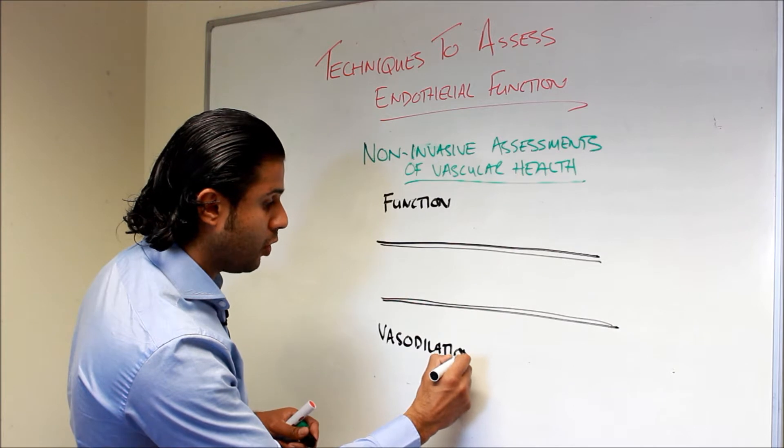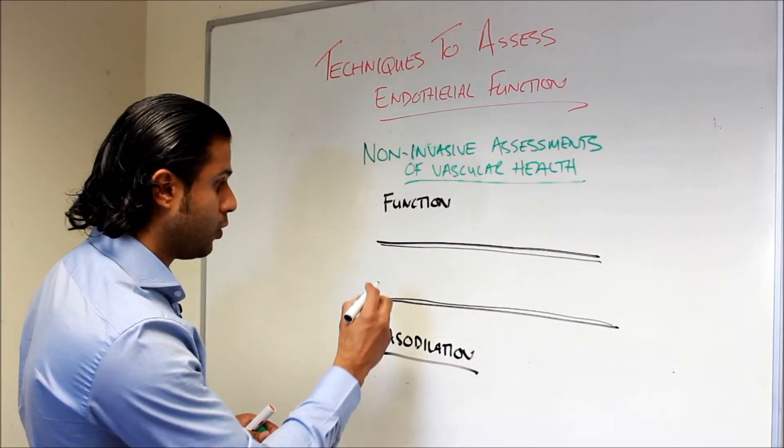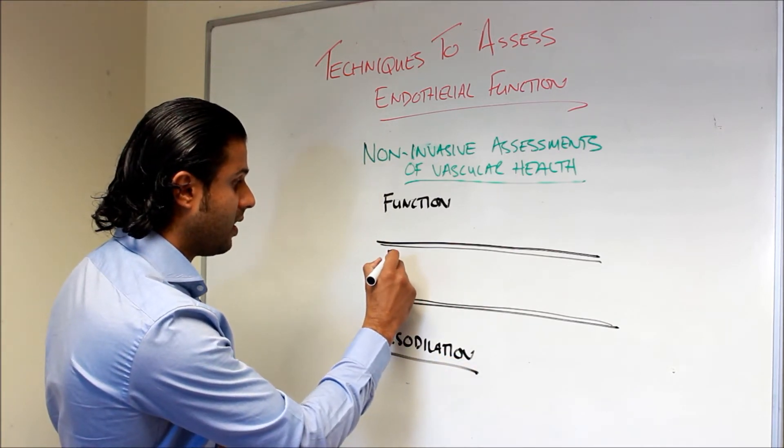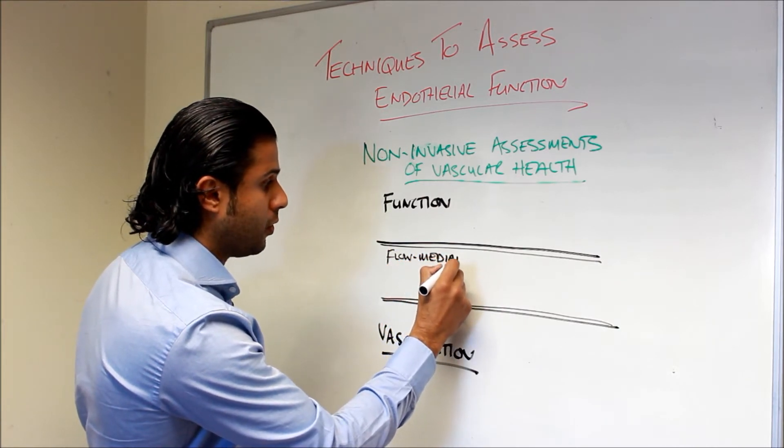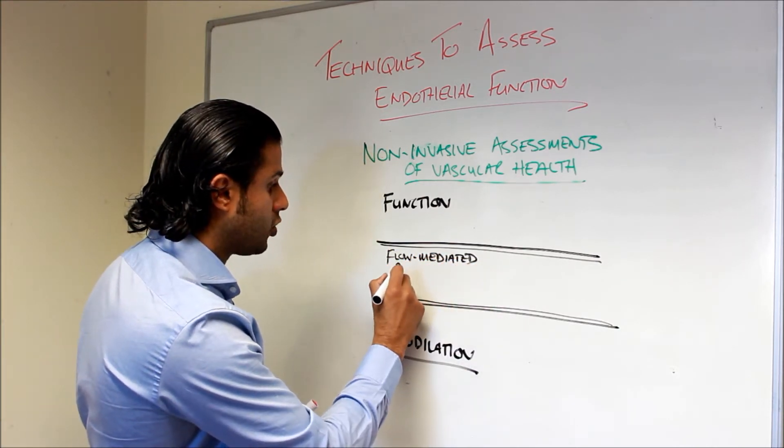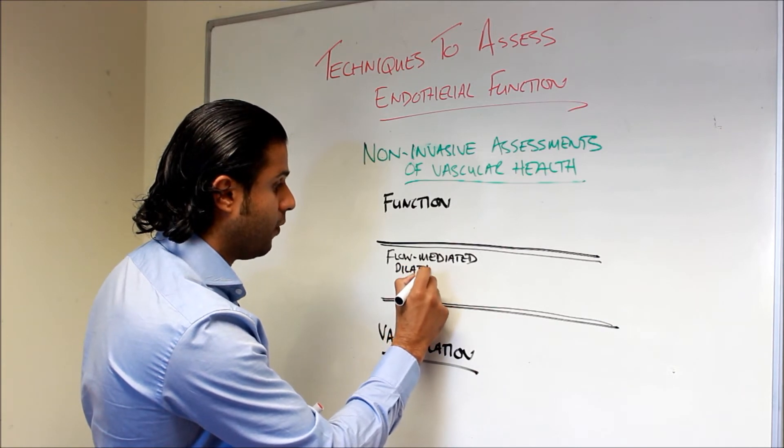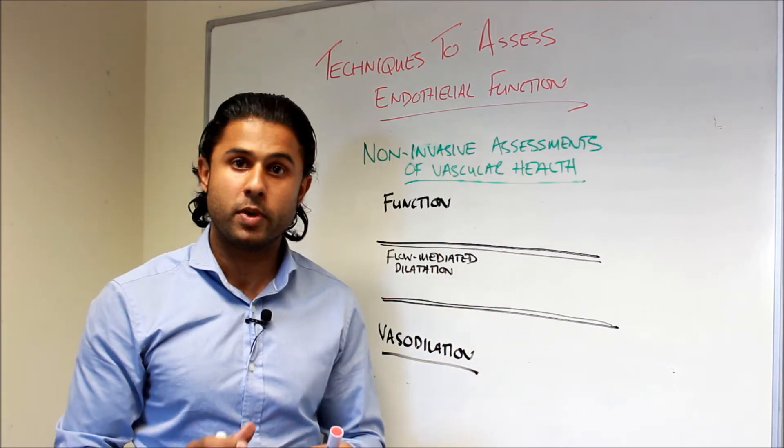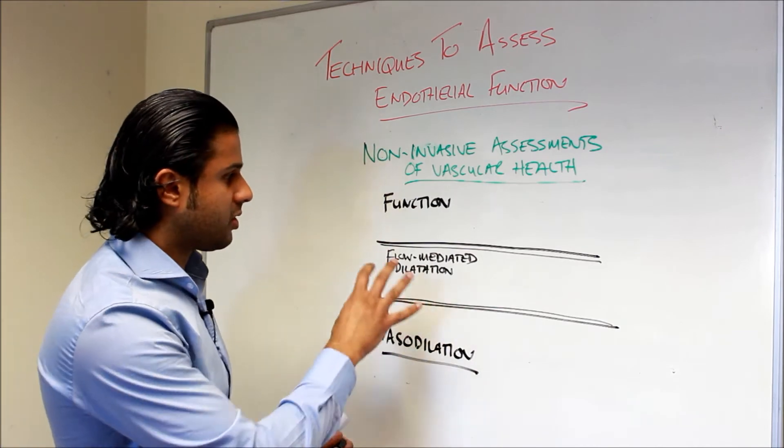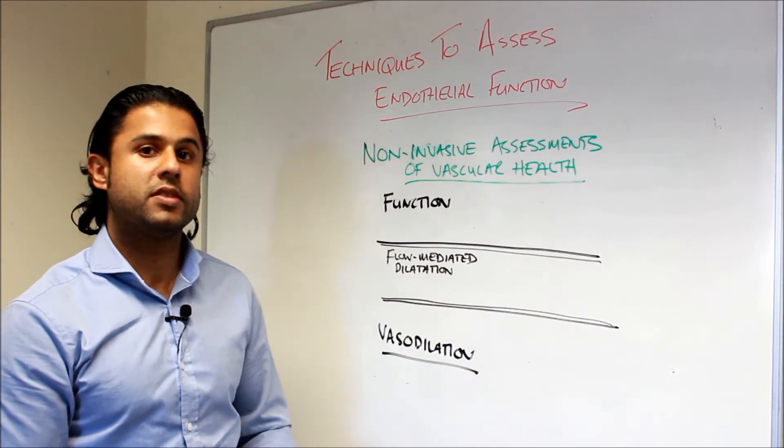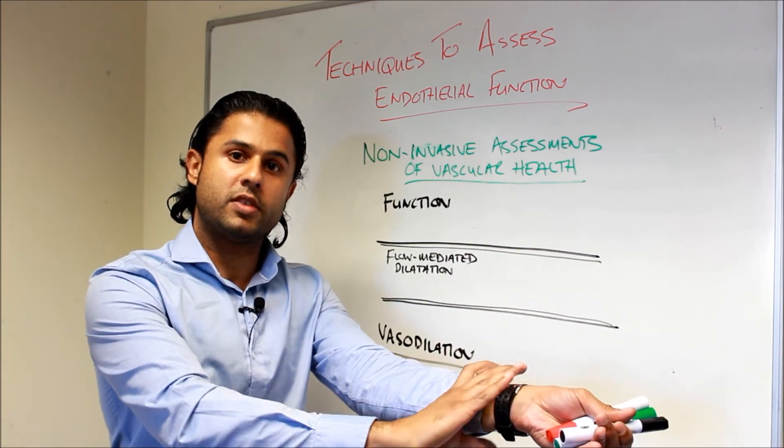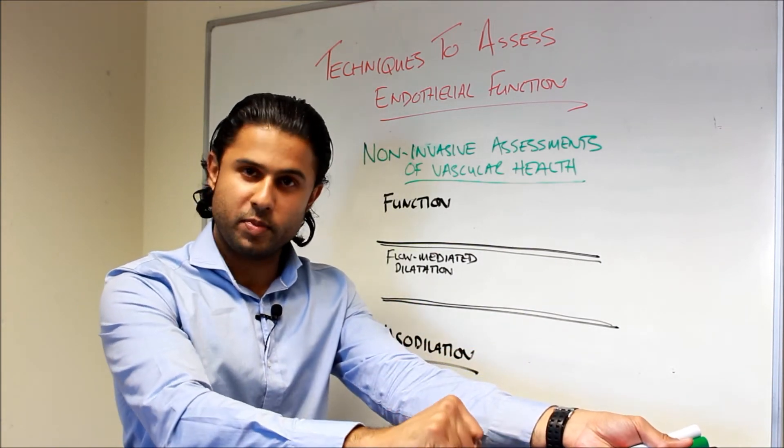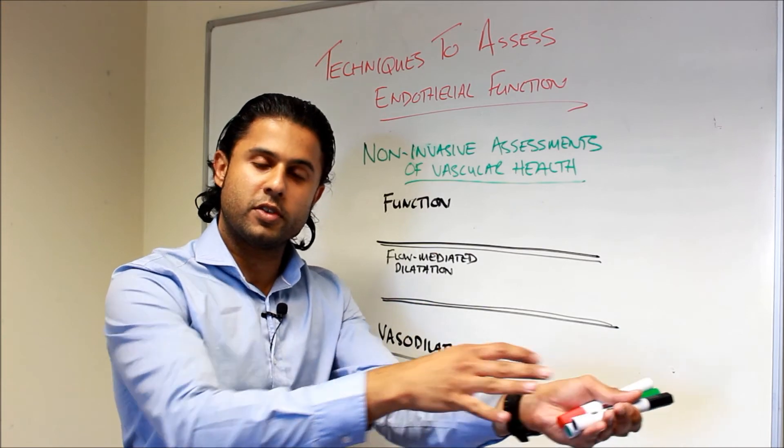Now amongst the most widely known technique is a technique called flow-mediated dilation. And I'm actually going to, in the next video, show you how this technique is actually performed down in our laboratories. But for the moment, we'll focus on the theory. So essentially what flow-mediated dilation is, is that we put a blood pressure cuff around the arm for five minutes. We inflate it for five minutes, so it stops the blood flow going to the hand.